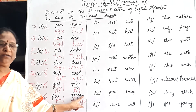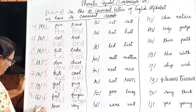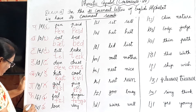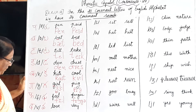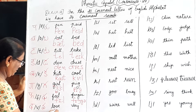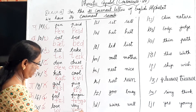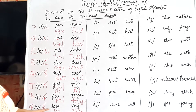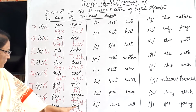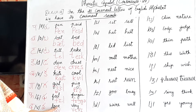V stands for the /v/ sound. Love, very. L is /l/, O produces the /ʌ/ sound, V is /v/, and the final E is silent. Very — V is /v/.